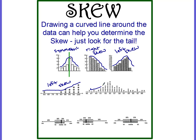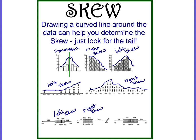Looking at this one, you can tell that there's more of a tail on the right side, so this would be a right skew, which means the majority of the data is on the left. Looking at box plots, you want to look for that median line — the line in the middle of the box. If the longer side goes to the left, it's a left skew. If the longer side goes to the right, it's a right skew. And when the line is in the middle, you can tell that it looks to be symmetric.